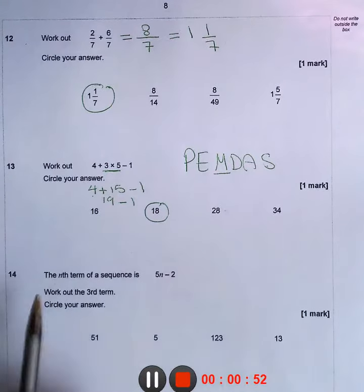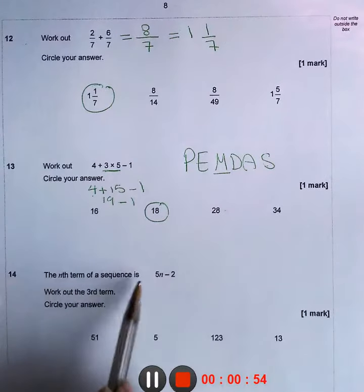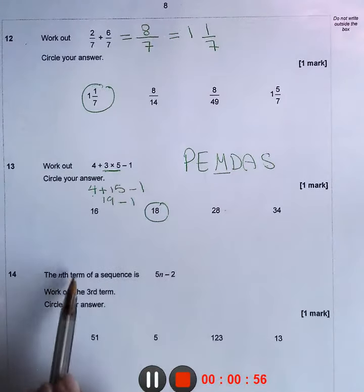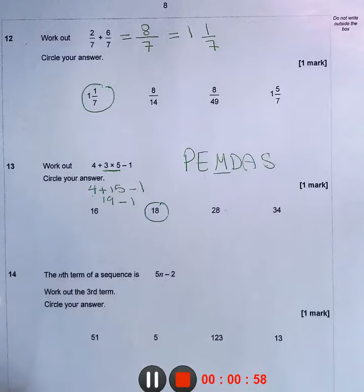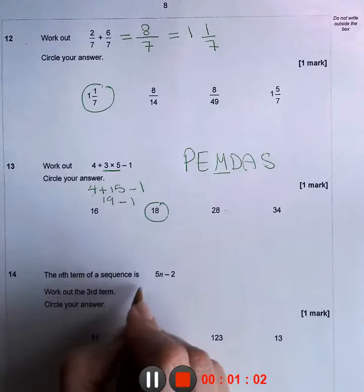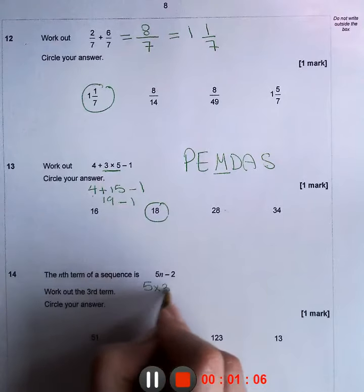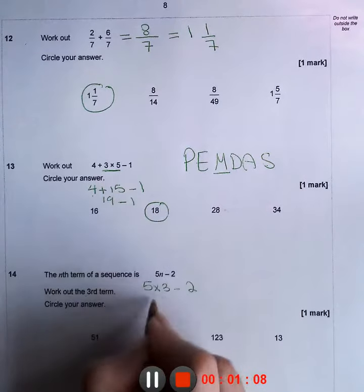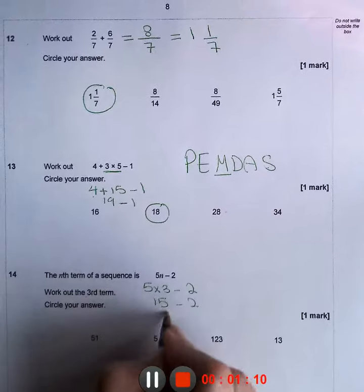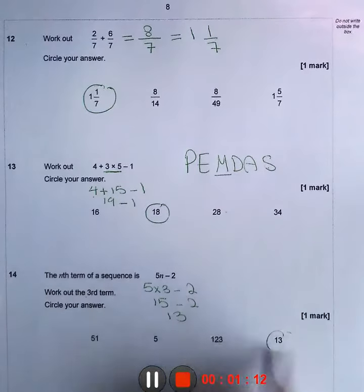Question 14: the nth term of a sequence is 5n minus 2, and we need to work out the third term. Since n represents the term, we substitute 3 for n. 5 multiplied by 3 minus 2. 5 times 3 is 15, minus 2 equals 13.